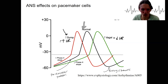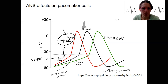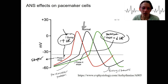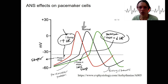What's changing is the slope of that depolarization. The sympathetic nervous system is going to make this slope steeper — increased slope. The parasympathetic nervous system, the vagus nerve, is going to make that slope less steep, more shallow — decrease the slope. That's how we affect heart rate: by changing the slope of the pacemaker potential, the rising phase before we reach threshold of the action potential.